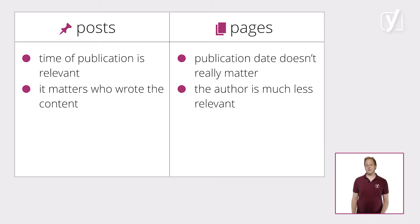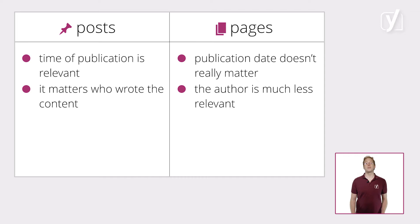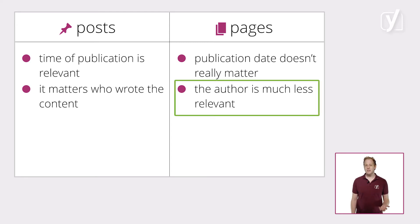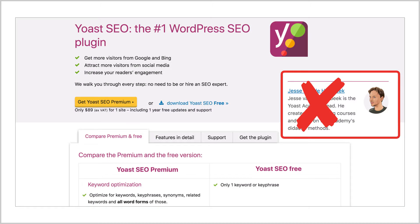A second difference is the fact that, for posts, it can matter who wrote the content. Visitors want to know who wrote a post. So when our founder, Joost de Valk, writes an article on technical SEO, for example, people know they can trust what he's saying. Moreover, posts are often written from a more personal perspective. For pages, the author is much less relevant. We don't display authors on our product pages or our About Us page, because who wrote that page doesn't really matter to visitors. That's why WordPress displays authors on posts, but not on pages.